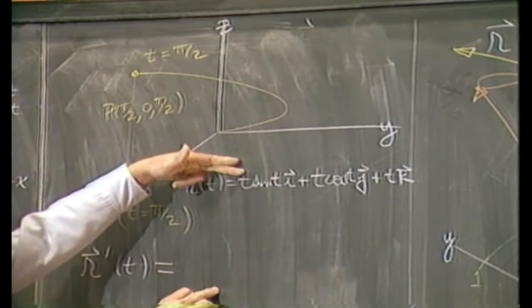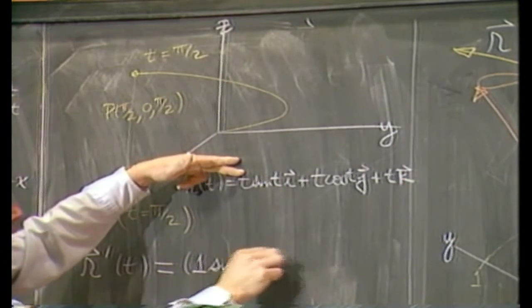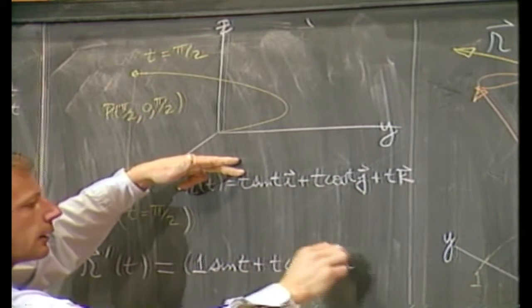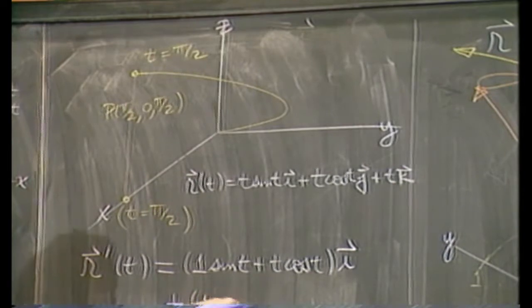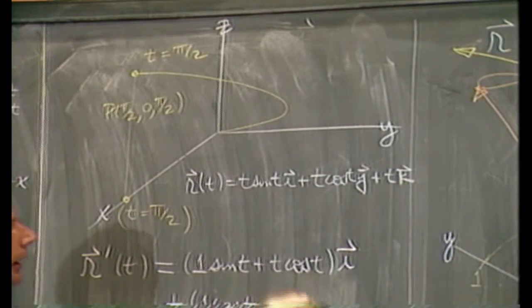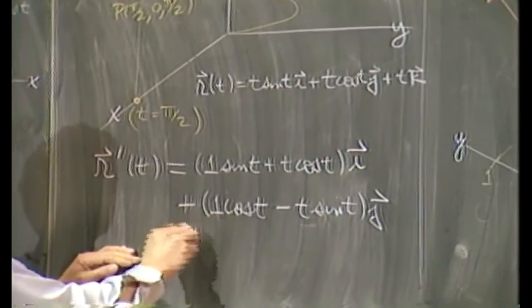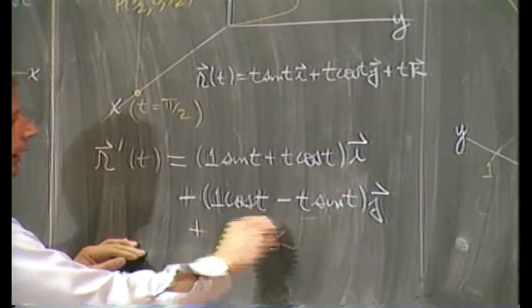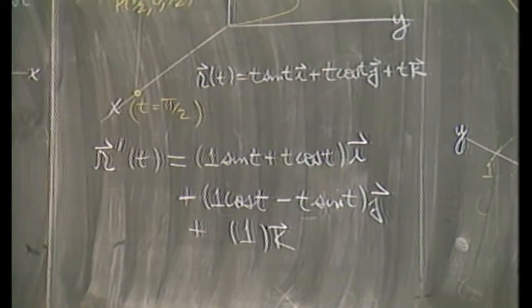If you plug it in there, for the component of i, product rule says it's 1 sin t plus t cos t times i. Similar for the second one, 1 cos t minus t sin t for j. And the derivative for k is just 1. K component has derivative of 1.